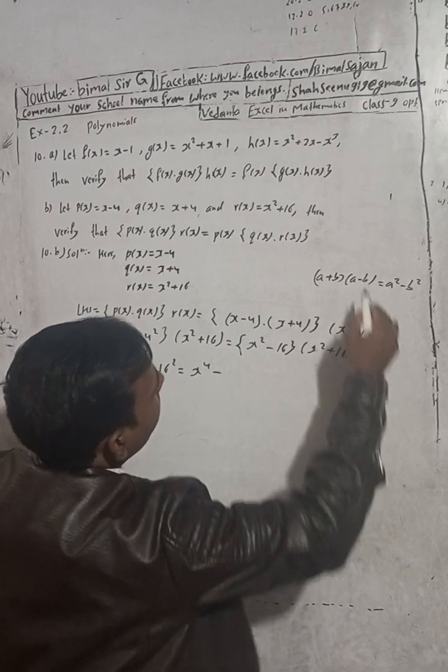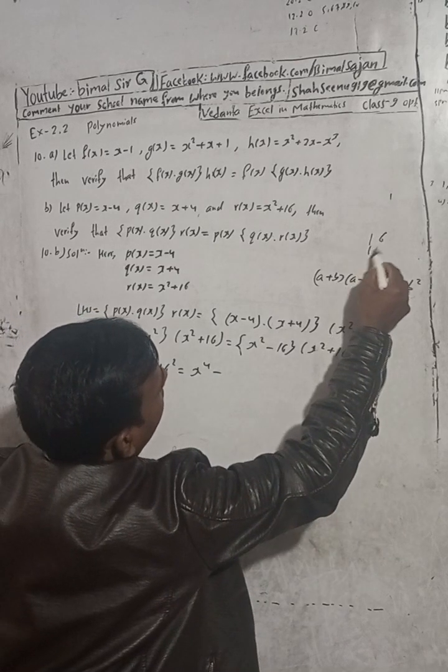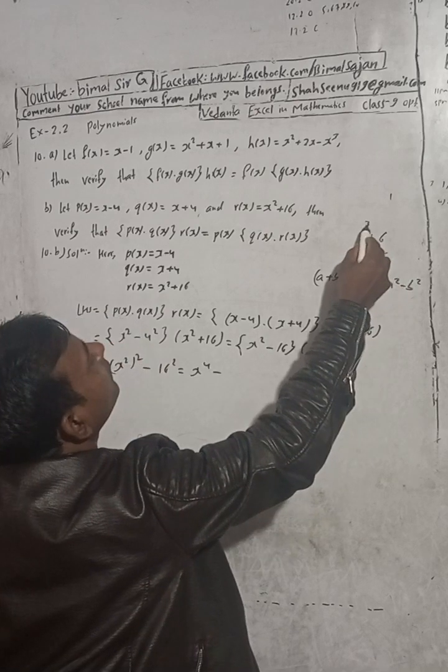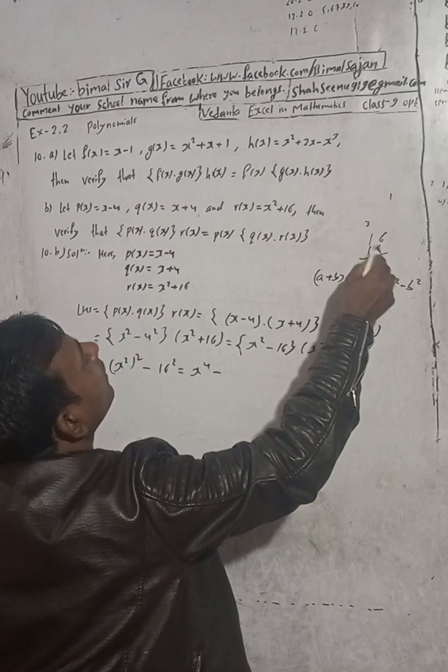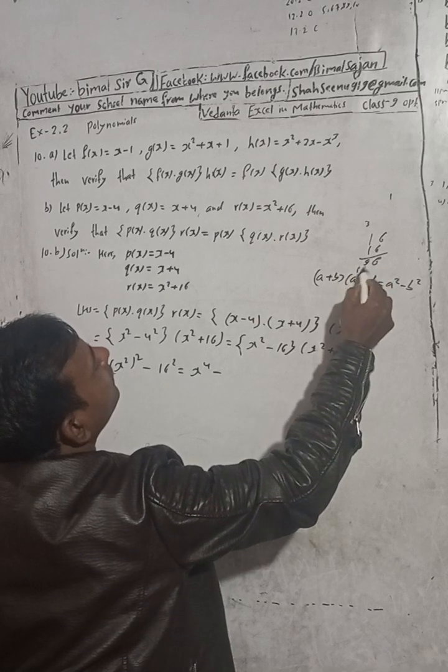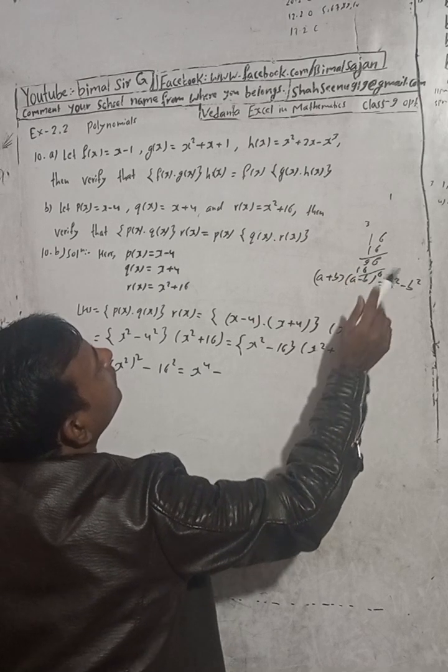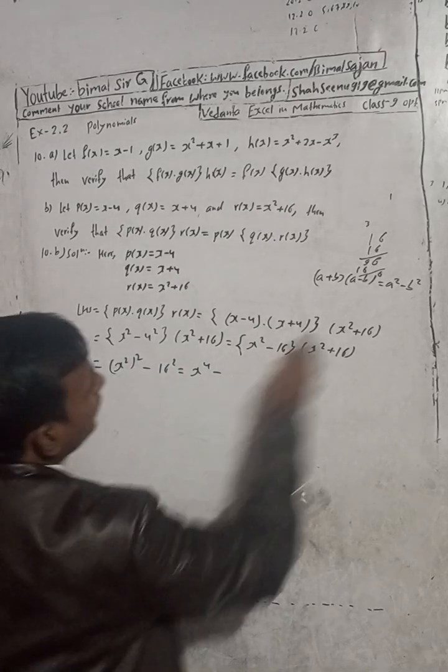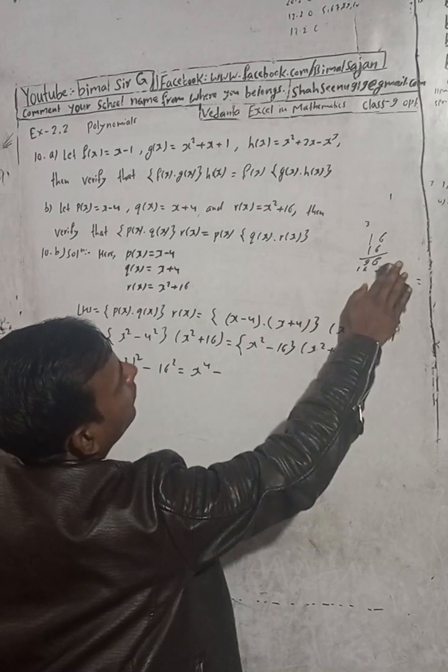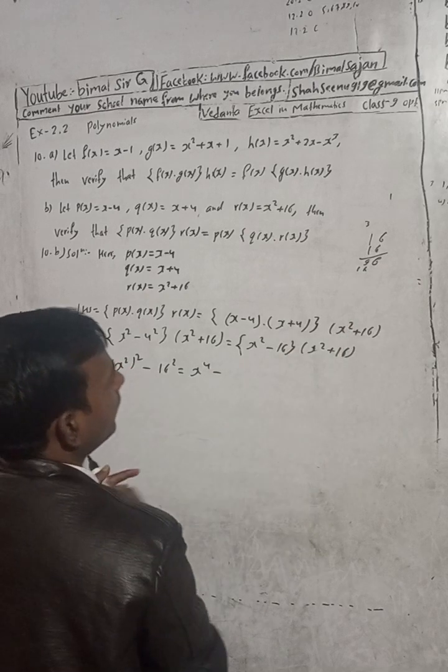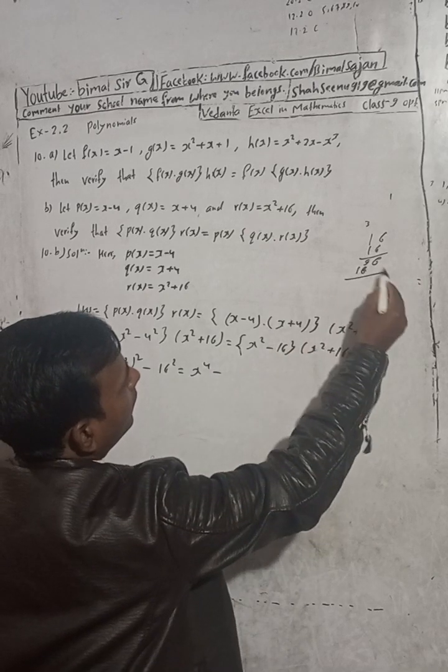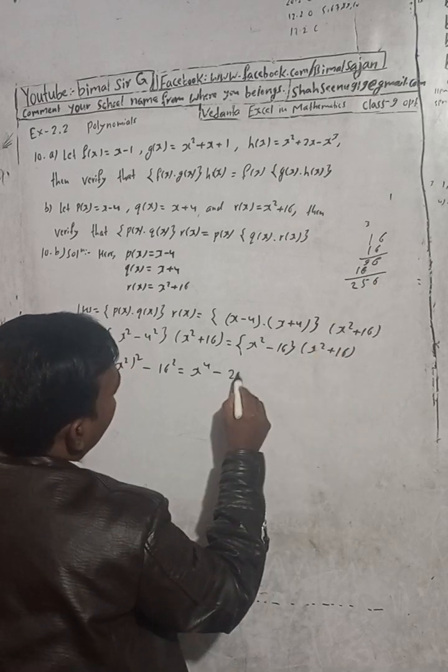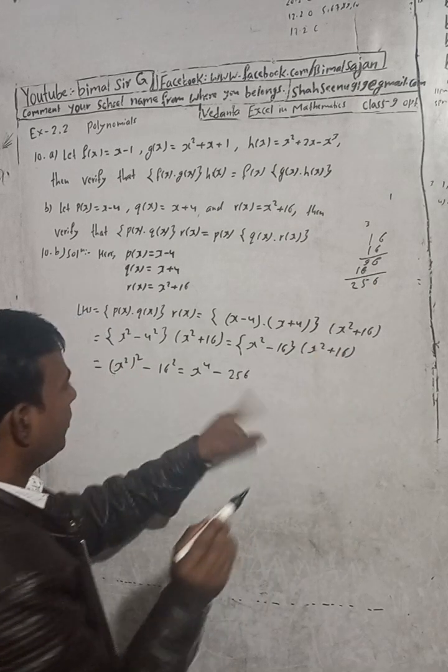16 to the power 2 is 256. This is LHS. We have got this much. Now RHS part. So we have to write this RHS part.